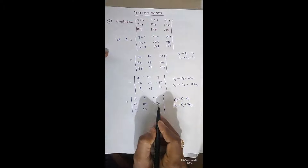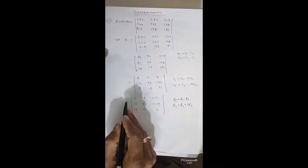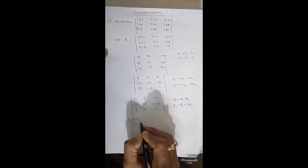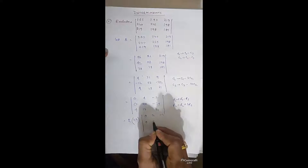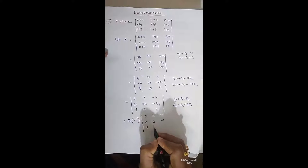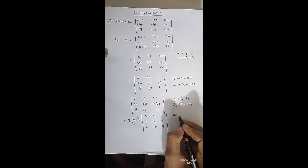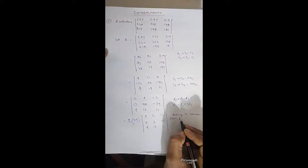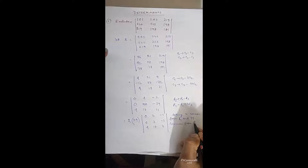Now take 2 common from row 1 and 39 common from row 2. Row 1 becomes: 0, 2, −1; row 2 becomes: 0, 2, −1; row 3 remains: 4, 17, 11. Taking 2 common from R1 and 39 common from R2.